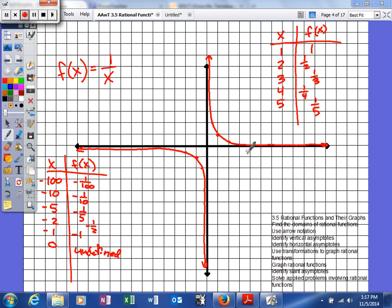Next, what we're going to talk about is how to use arrow notation when we're talking about rational functions. Now, as you can see, we've graphed just a basic rational function: f of x is equal to 1 over x.